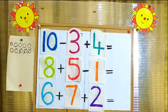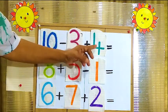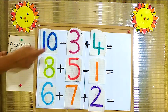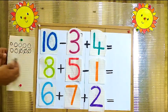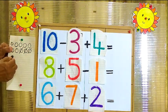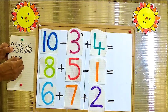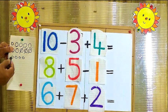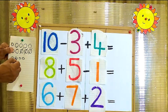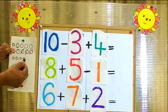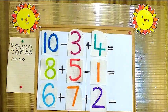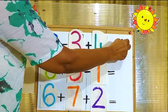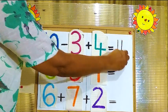Okay. Now here 7, here 4. Now 1, 8, 9, 10, 11. The answer is 11. The answer is 11.